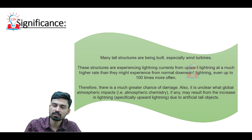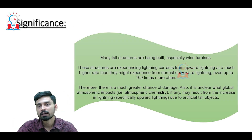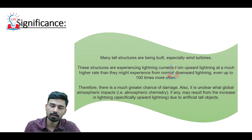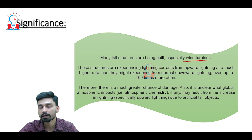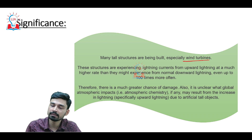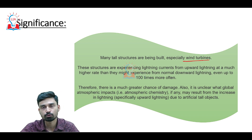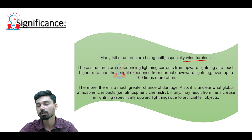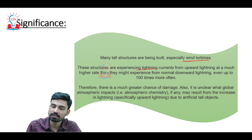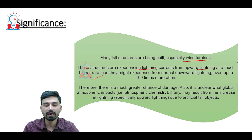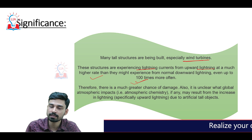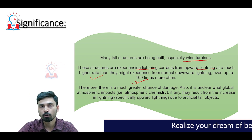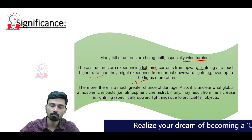As for the significance of this discovery, scientists believe that as we continuously build taller structures worldwide — especially with the focus on renewable energy and the rapid increase in wind turbine construction — these structures experience lightning currents from upward lightning at a much higher rate than from normal downward lightning. It is believed that some structures are experiencing 100 times more upward lightning compared to normal downward lightning.